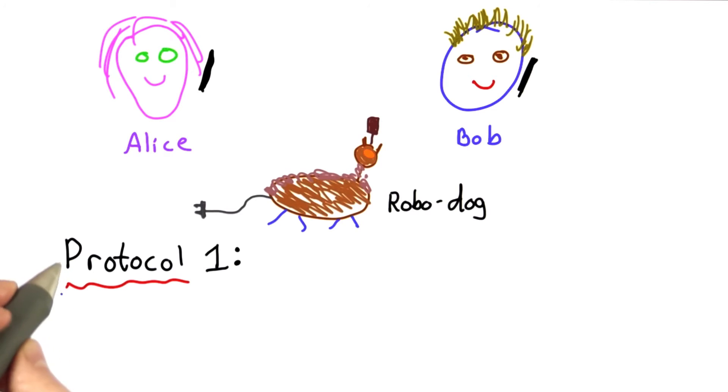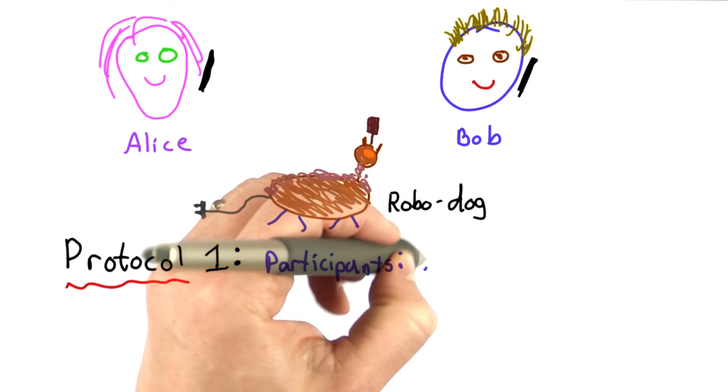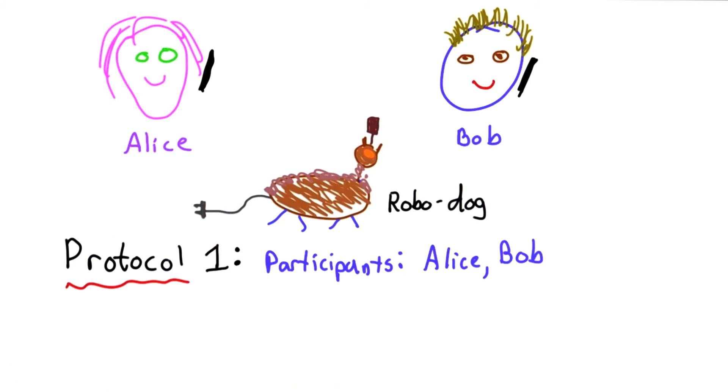So now let's describe our first protocol for this. And this is intended as a cryptographic security protocol. And its participants are two parties, Alice and Bob. The robo-dog that needs charging is certainly involved in this process, but is not an active participant in the protocol. And here are the steps.